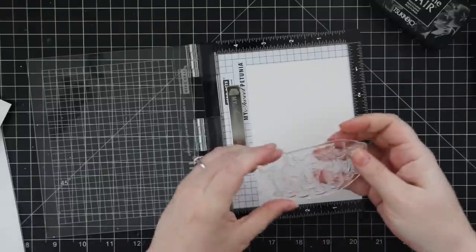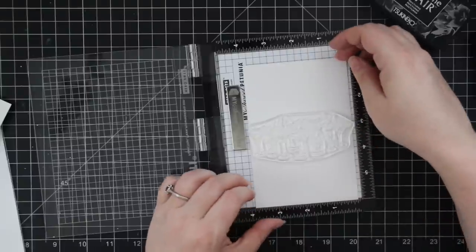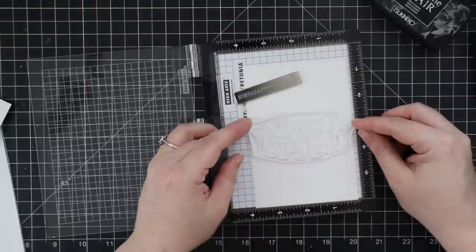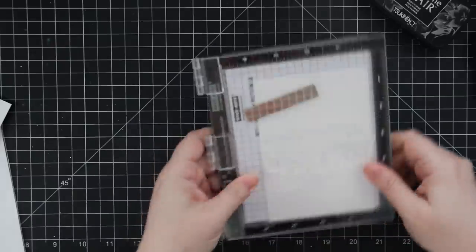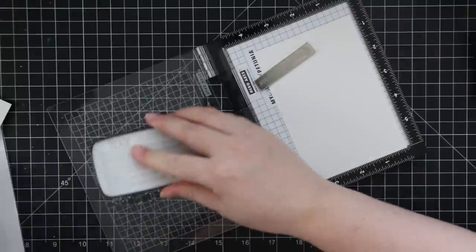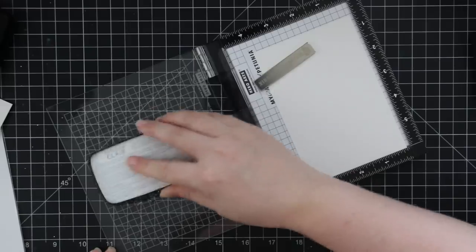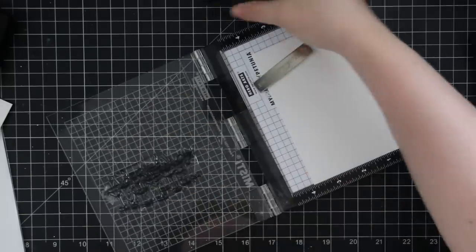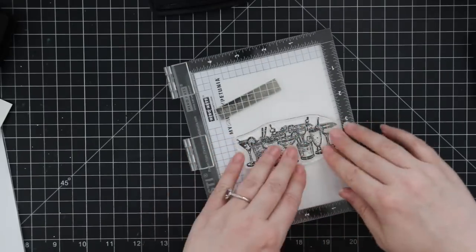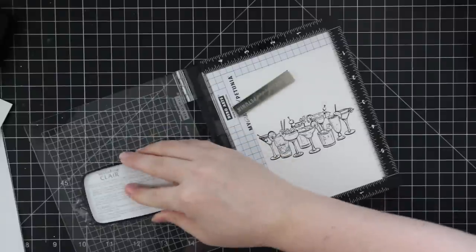I will have links to everything in the description box below the video. As with all the Stamptember collaboration sets, this is limited edition while supplies last. All the info will be in my blog post. To start off, I have some Bristol smooth cardstock in my mini MISTI and I used my anti-static powder tool. Then I have the large cluster of drinks image from this Happy Water set and I'm stamping it with VersaFine Clair Nocturne ink.